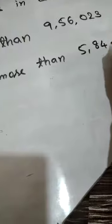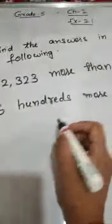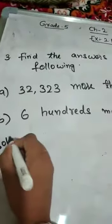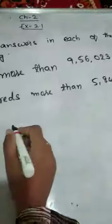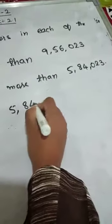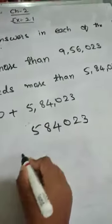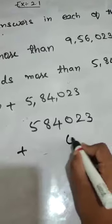Let us do the next one. What is the second one here? 600 more than 5,084,023. Same, we have to add this number 600. So we have to take 600 like this plus 5,084,023.